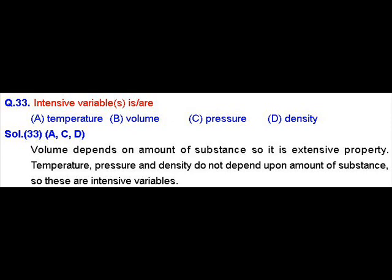Coming to B, volume — we know that the volume of a substance depends upon its quantity; the more the quantity, the more will be its volume. So volume is not an intensive property, it is an extensive property. Coming to pressure — pressure is also independent of the amount of substance, so pressure is also an intensive property. And density — we know that density is independent of amount, so density is also an intensive property. Out of the 4 options, A, C, and D represent the intensive properties.